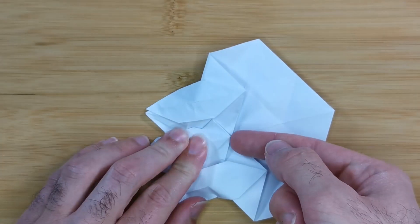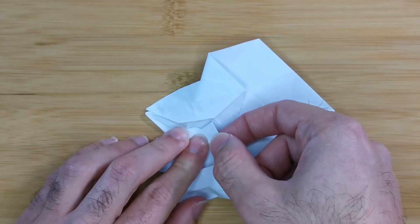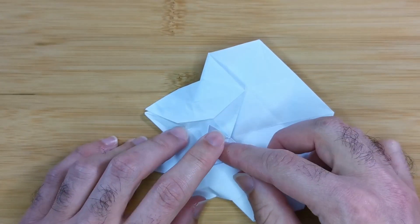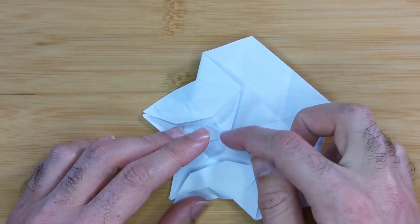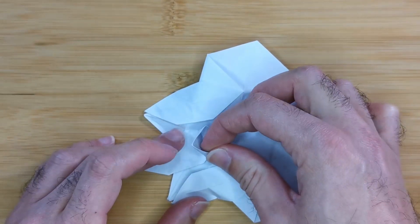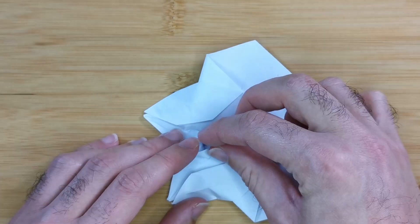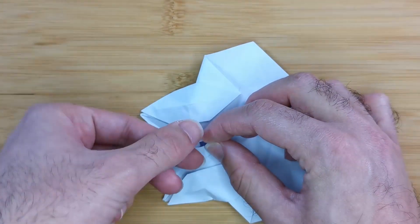Now we want to open this pocket here and fold the outside edges to the gap created by the two layers of paper below. Just like this.